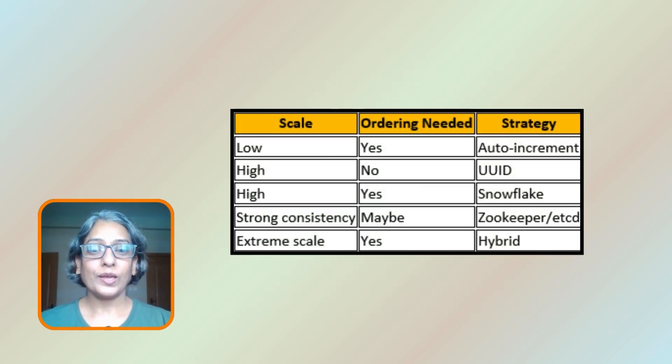After understanding all five strategies, how do we choose? You can refer to the table shown here. So the next time someone says 'let's just use UUIDs,' ask them: what's your scale? Do you need ordering? How many regions? This small decision impacts system performance for years.